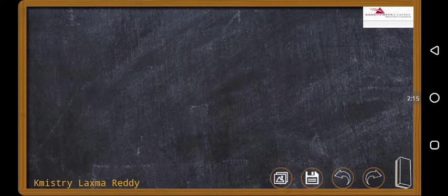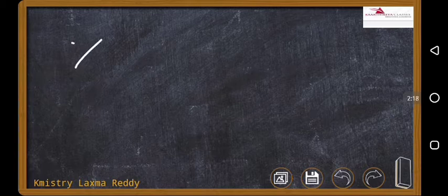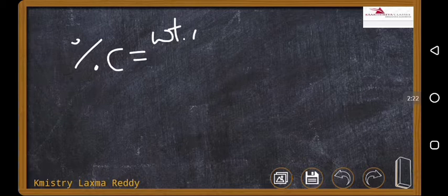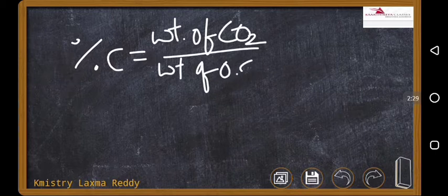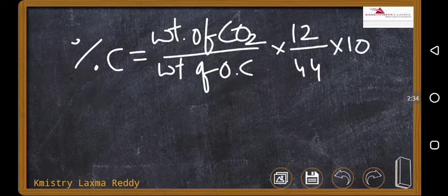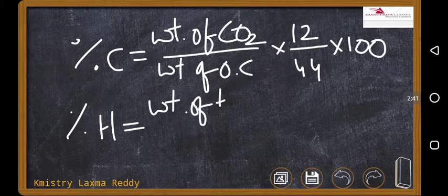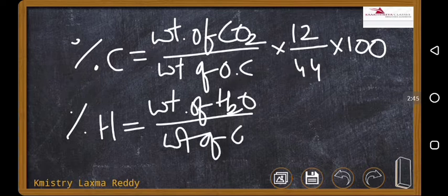But for you, I will give you direct things. Percentage of carbon is equal to weight of carbon dioxide by weight of organic compound into 12 by 44 into 100. Remember this formula, that's enough. Similarly, percentage of hydrogen is equal to weight of water by weight of organic compound into 2 by 18 into 100.